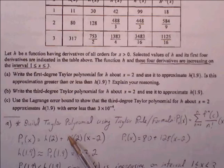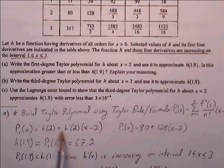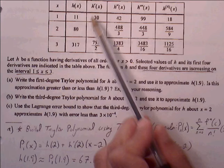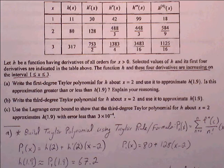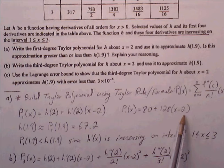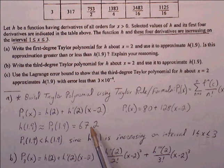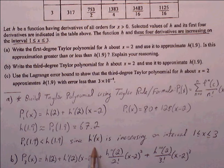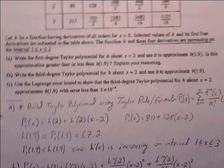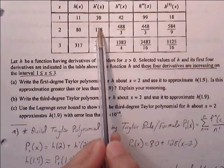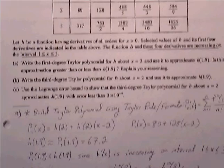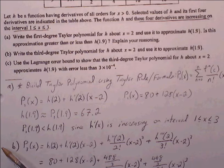All we need is h of 2 plus the slope times x minus 2. h of 2 is 80 and h prime of 2 is 128, so the tangent line is 80 plus 128 times (x minus 2). Plugging in 1.9 gives 67.2. This is less than the actual value because h prime is increasing on the interval from 1 to 3, meaning the graph is concave up, so the tangent line approximation lies below the actual value.